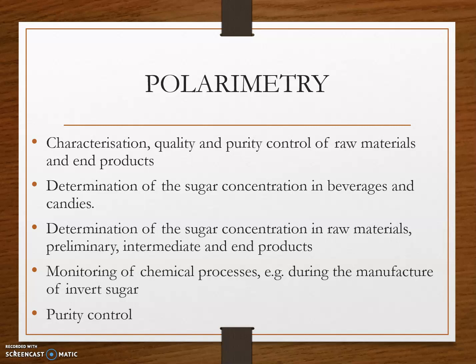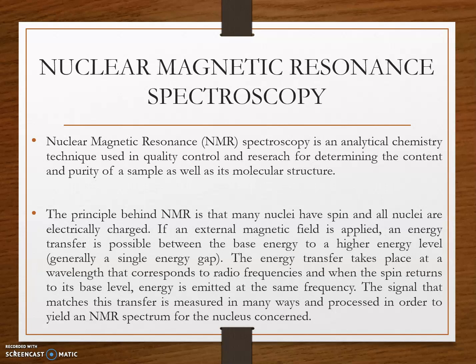Next is nuclear magnetic resonance spectroscopy. NMR is an analytical chemistry technique used in quality control and research for determining the content, purity, and molecular structure of a sample. NMR can quantitatively analyze mixtures containing unknown compounds.